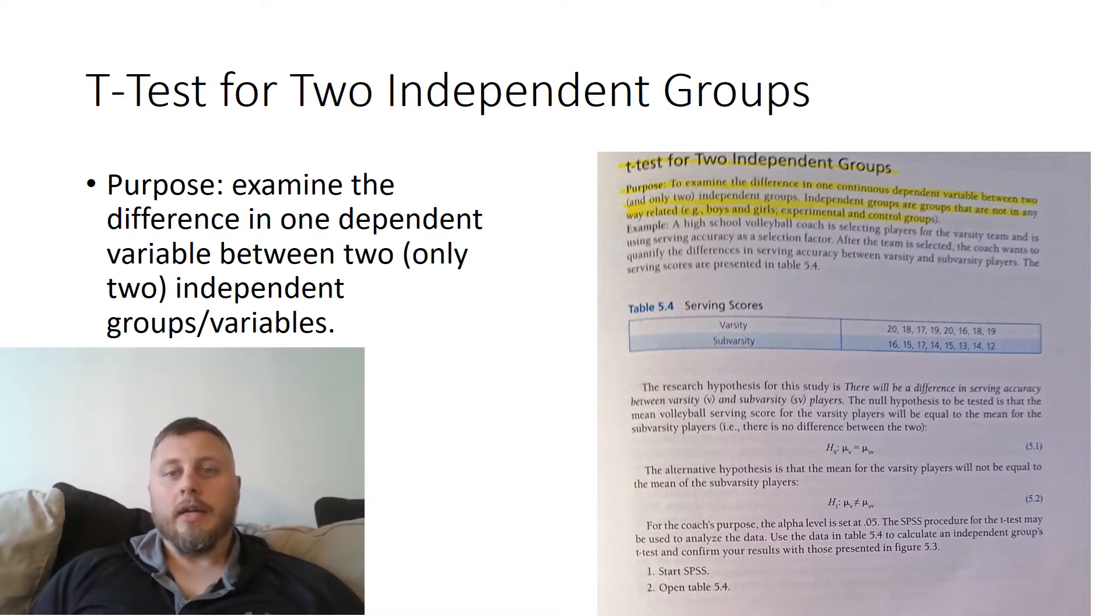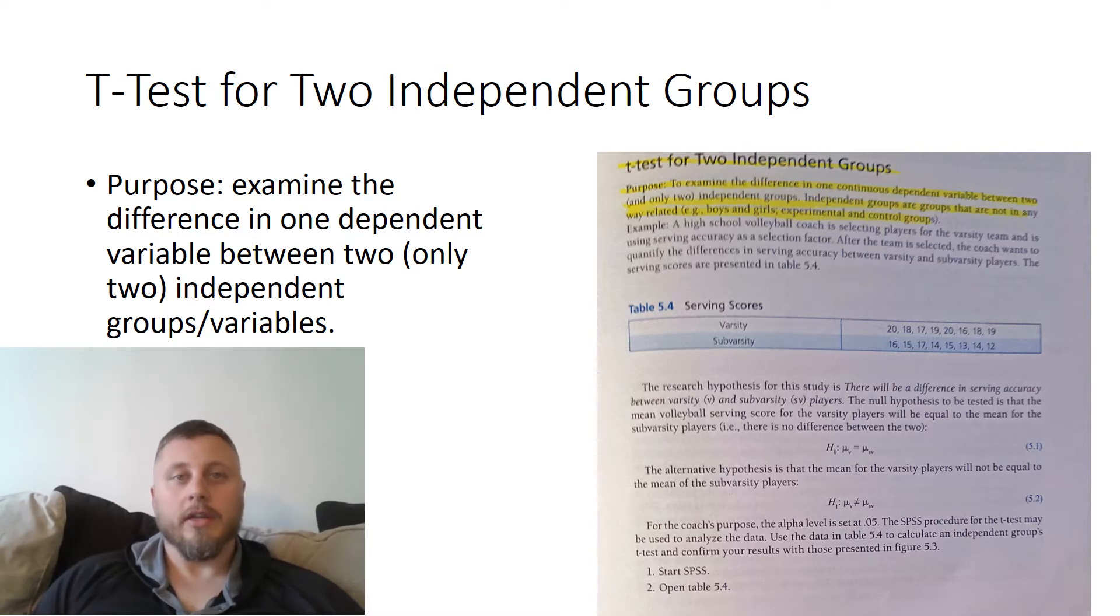Just to go over the situation here, the coach has your varsity and sub-varsity, which makes up your independent groups and their scores associated with each group off to the right-hand side. The coach has set a 0.05 alpha level, and basically he's using SPSS to calculate any of the data. So again, no math involved with this, but as far as knowing how to read the chart on the next slide.